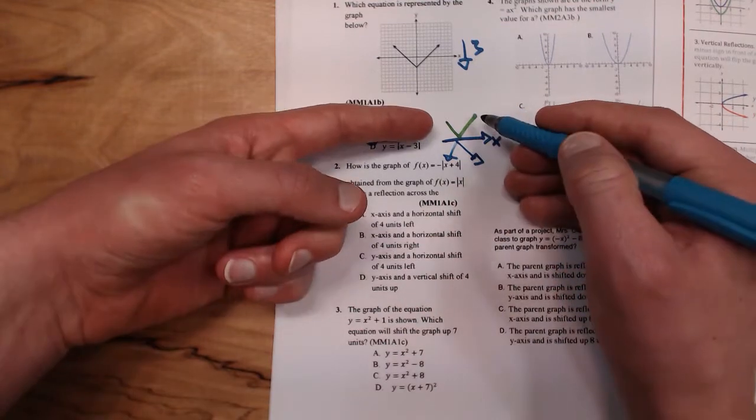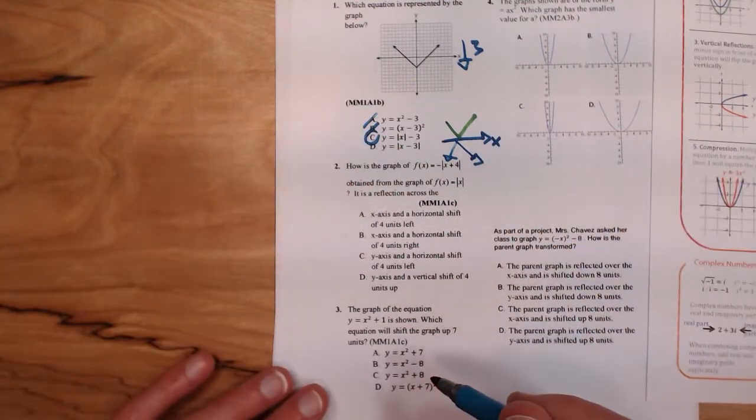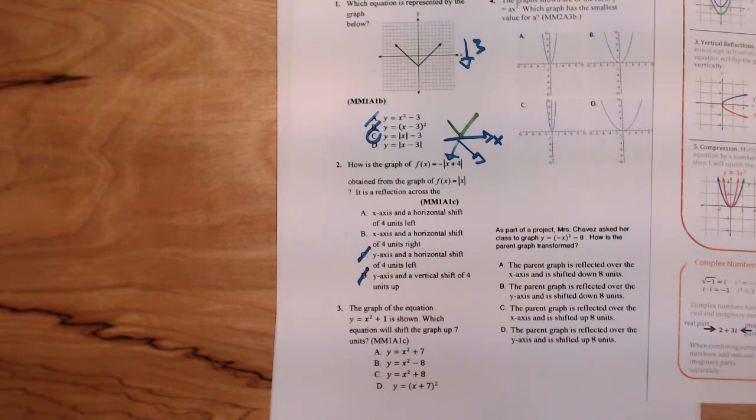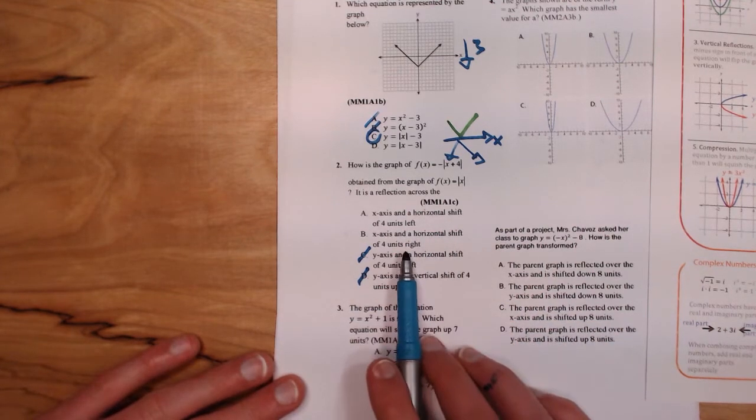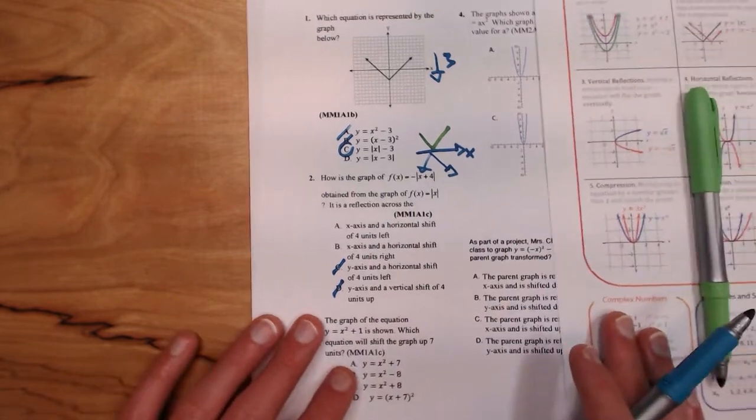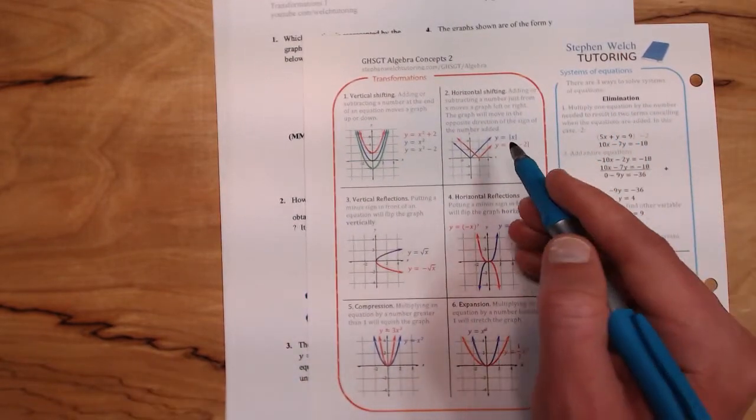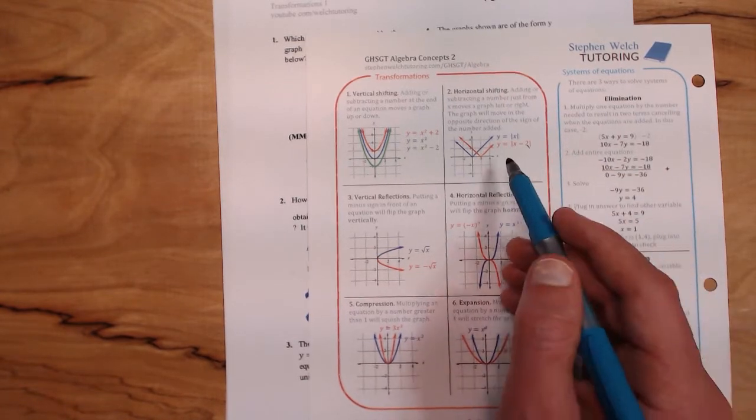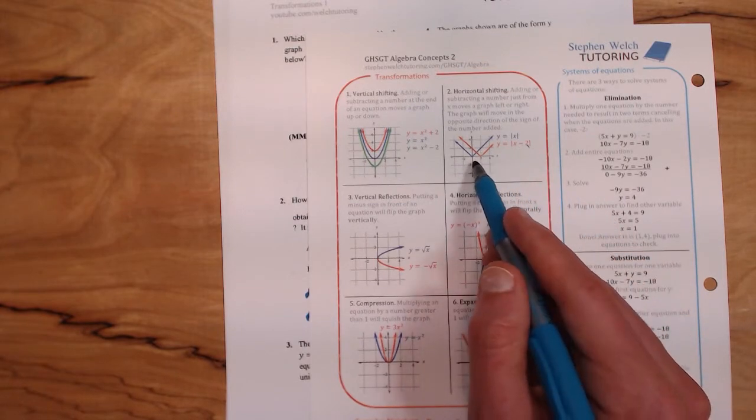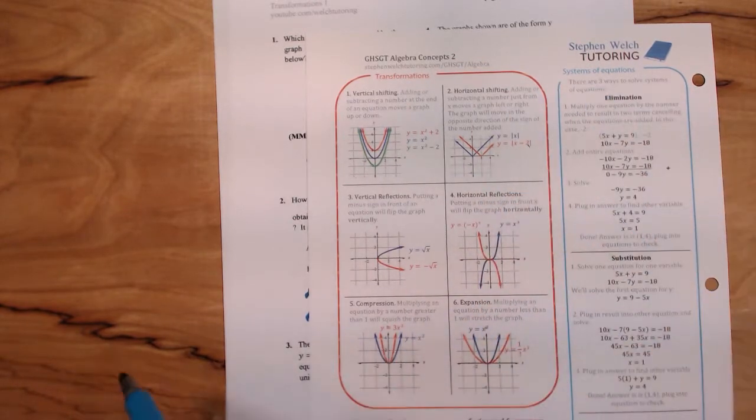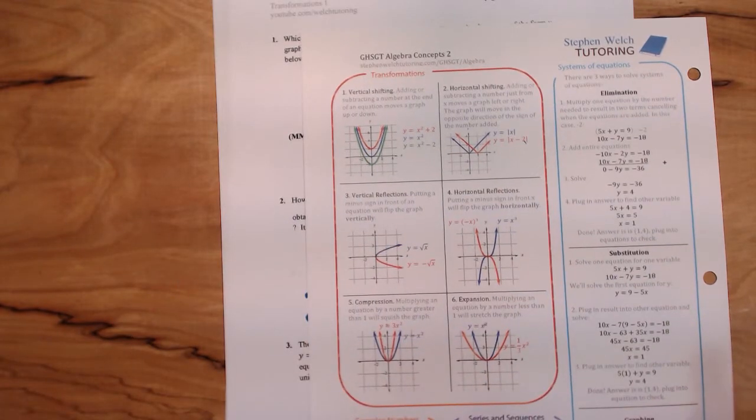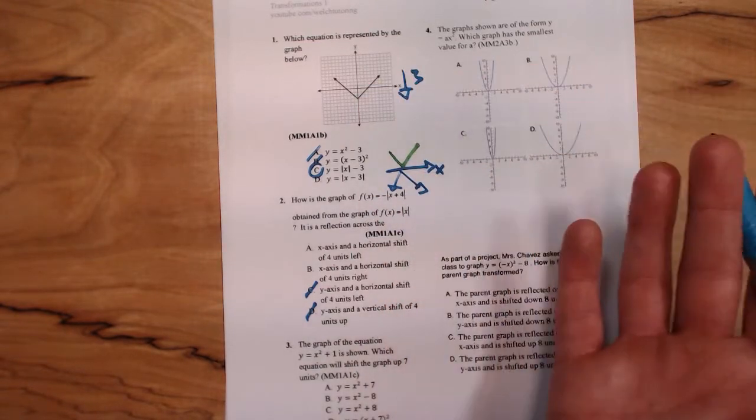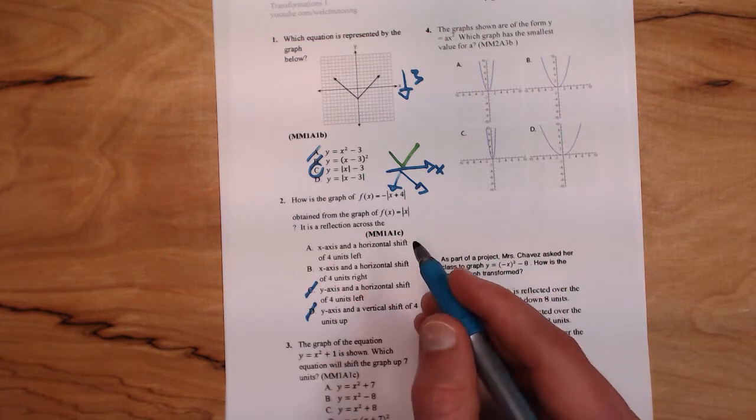Based on that, answer choices C and D must be wrong because we know it's the x-axis. Our next issue is are we shifting to the left or to the right? This is kind of strange, but it's on your formula sheet. Your function will move in the opposite direction of the sign of the number it's being shifted by. In our example here we have a -2, but our function ends up going 2 to the right, which is the positive x direction. So it's backwards. Our +4 is going to move our function in the opposite direction, so it'll be a shift to the left. So our answer for this is A.